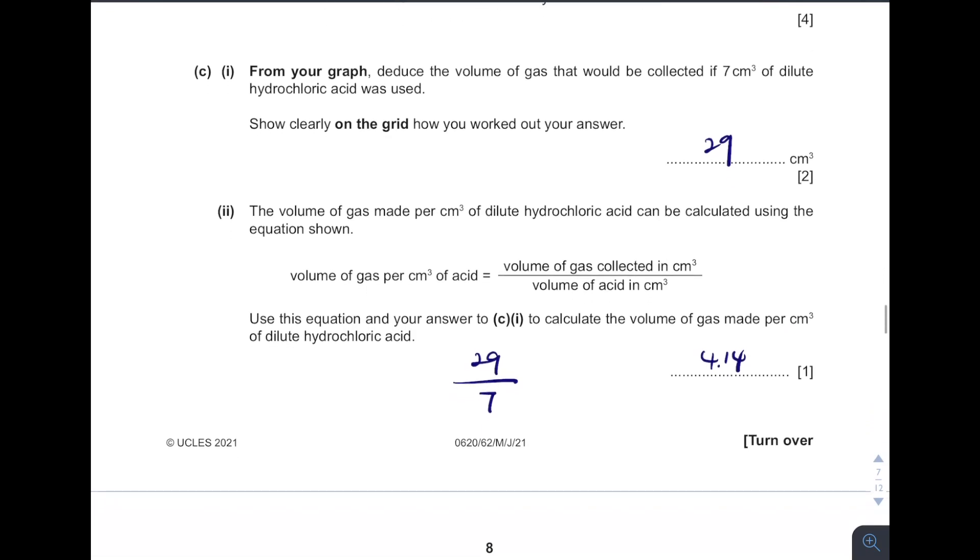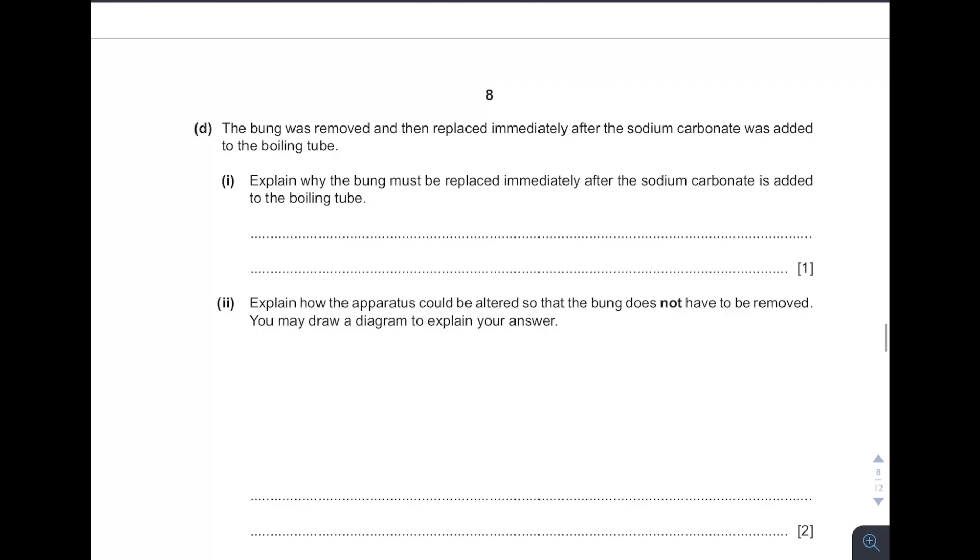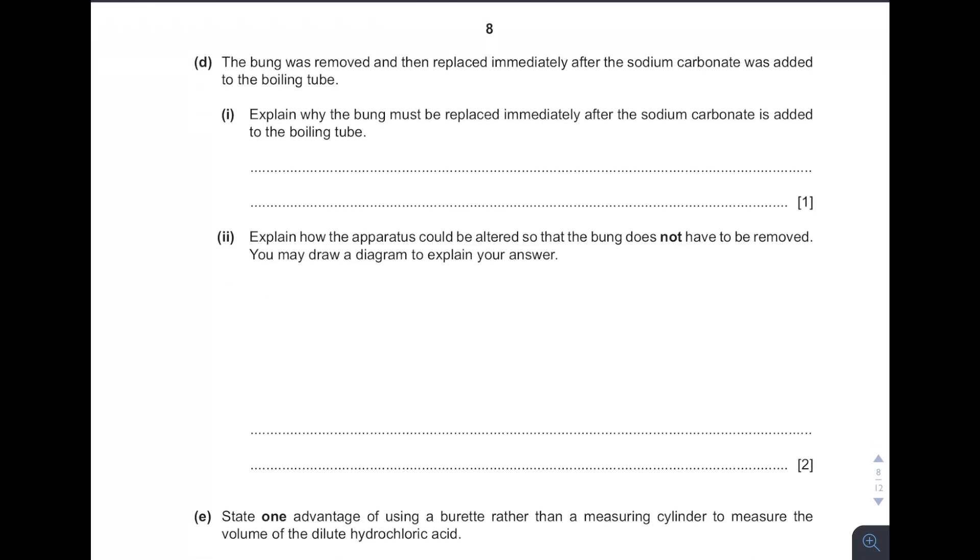So next one. See, the bunk was removed and then replaced immediately after the sodium carbonate was added. So why the bunk must be replaced immediately after the sodium carbonate is added? This experiment is about the volumes of gas collected. Imagine if you remove the bunk and then you close the bunk again, that might be probability that the gas will escape. So which eventually it will affect the volumes of gas collected. So this is to prevent the gas from escaping.